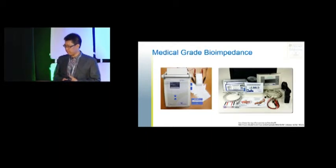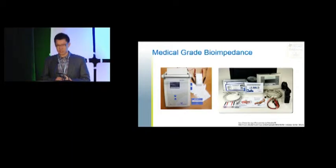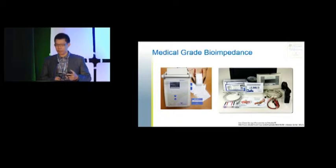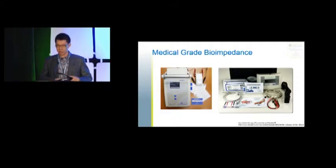These are the medical-grade devices. The one on the right is the RJL Systems, used in some dialysis and physiology studies. The one on the left is the Fresenius BCM monitor. They're both similar in terms of reporting, but the Fresenius machine actually has more frequencies and is compatible with the Fresenius 5008 dialysis machine cards. Both have been reported in the medical literature.